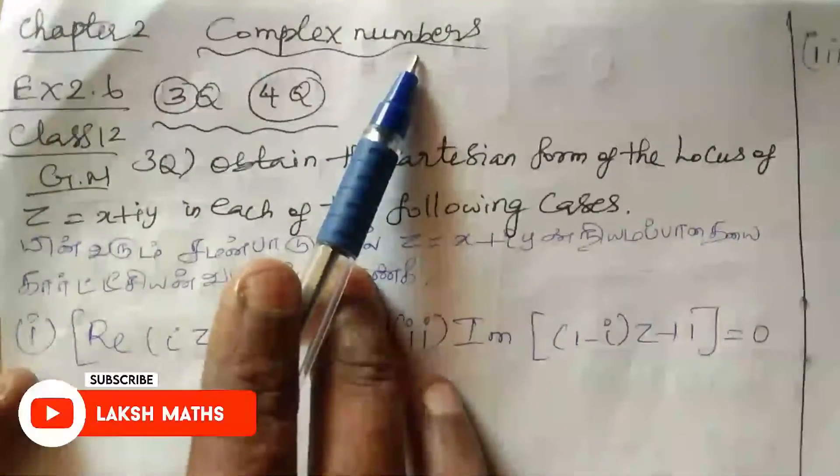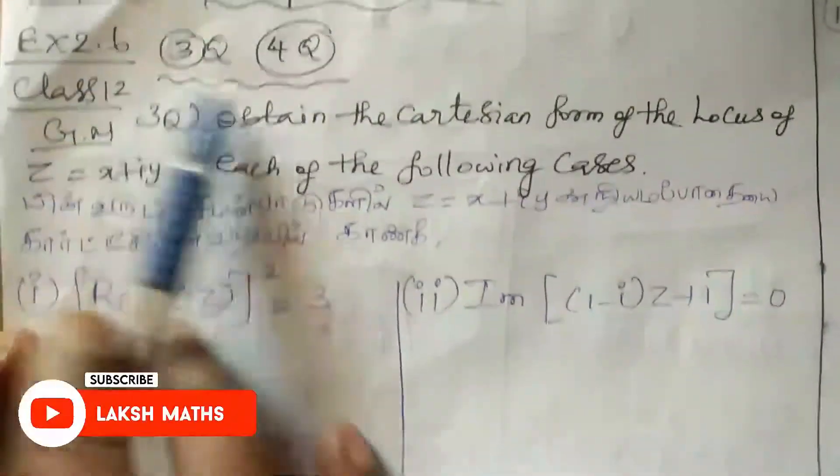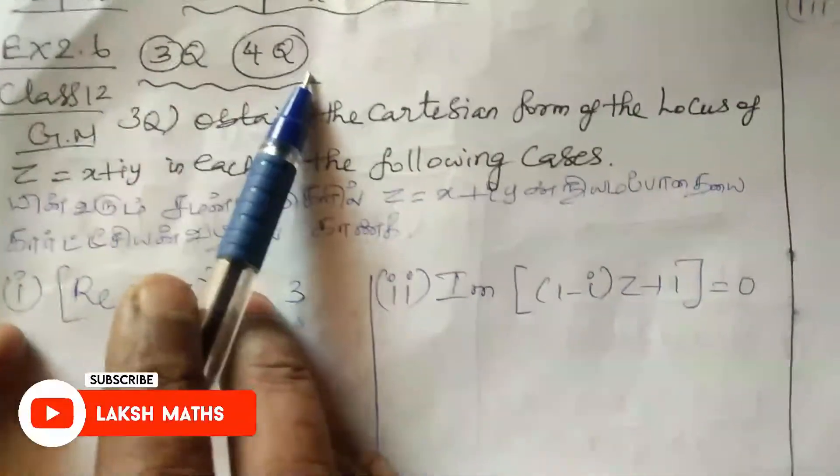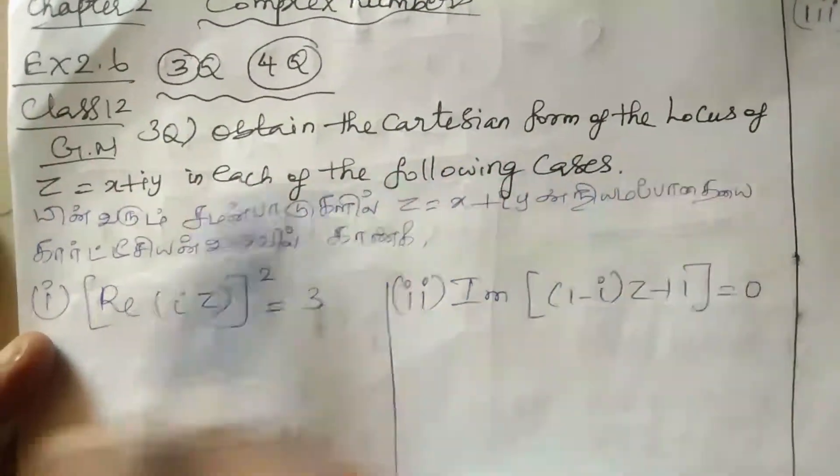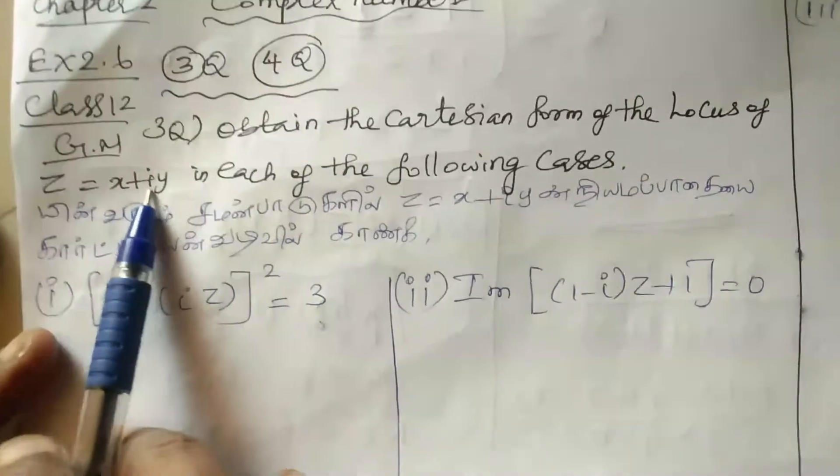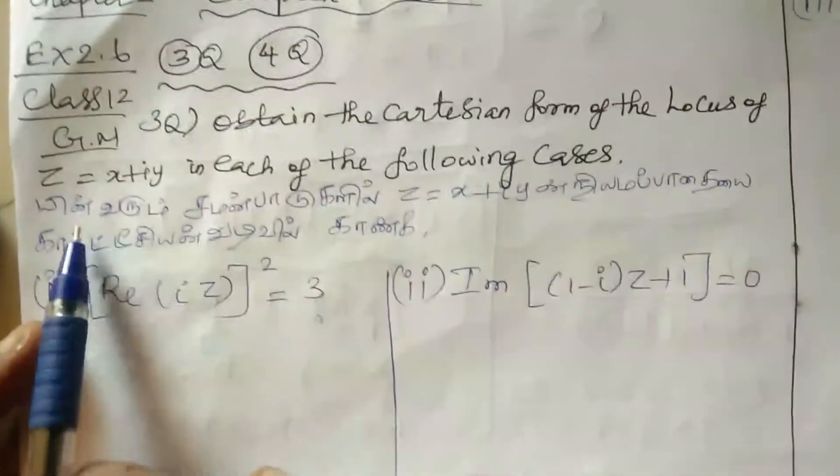Hi students, chapter 2, complex numbers, exercise 2.6, third question, fourth question. Third question: obtain the Cartesian form of the locus of Z equal to X plus IY in each of the following cases.